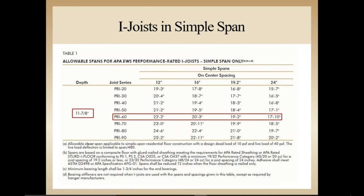This table is based on L/480 deflection criteria, which exceeds the code-required deflection criteria of L/360. These spans are also based on the floor sheathing being mechanically fastened to the joists as well as glued, creating what's called a composite floor. This composite assembly extends the spans beyond what could be reached if the floor sheathing was only mechanically fastened to the joists. It also helps prevent floor squeaks. A minimum bearing length of inch-and-three-quarter is required. Bearing and web stiffeners are generally not required with these span limitations unless other loading is placed on the joists.